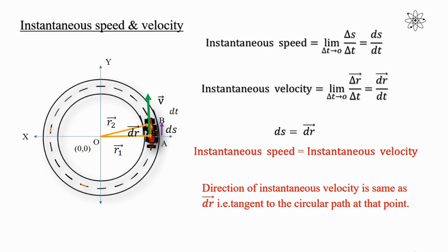The direction of instantaneous velocity is the same as vector dr — that is, tangent to the circular path at that point. Instantaneous velocity is the rate of change of direction of the radius vector, and the magnitude of the velocity is constant.